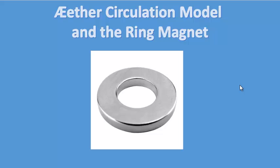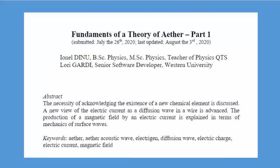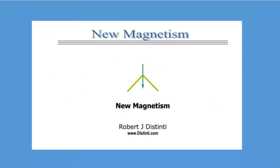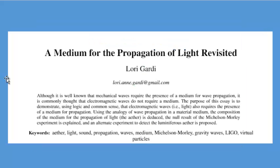This term is a culmination of years of research, not just Yonel's work, but also Robert Distinti's work and his New Magnetism, which is what we're going to talk about today. And also historically, the paper I wrote called 'The Medium for the Propagation of Light,' which was the beginning of my thinking about Ether in terms of circulation.